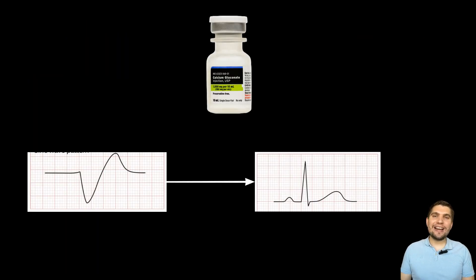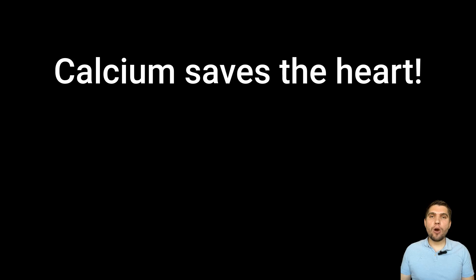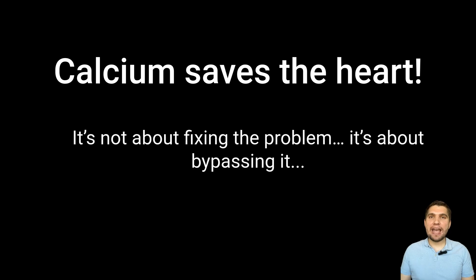So, why does this new understanding matter? Clinically, this justifies why calcium gluconate rapidly normalizes ECG abnormalities despite no change in resting membrane potential. The take-home message is clear: calcium gluconate works not by fixing sodium channel function or stabilizing the membrane, but by establishing an alternative conduction pathway through calcium-dependent mechanisms.